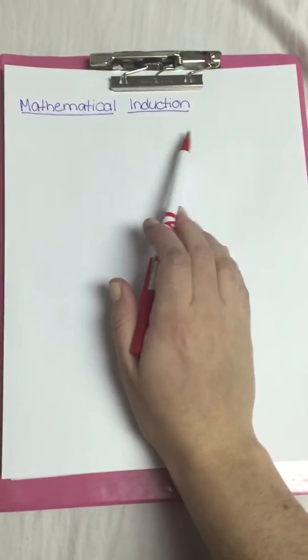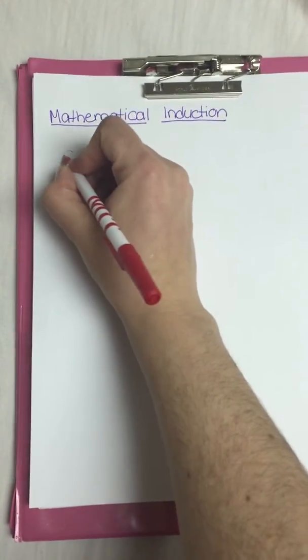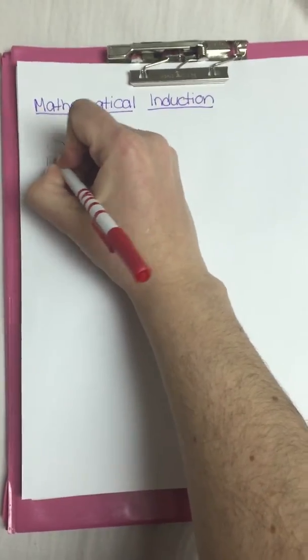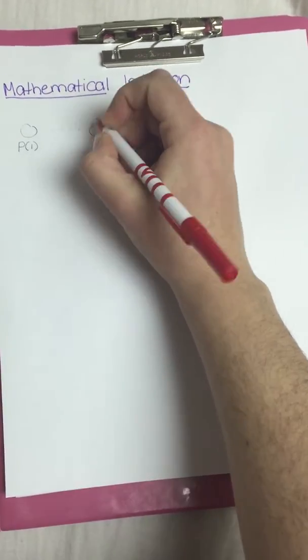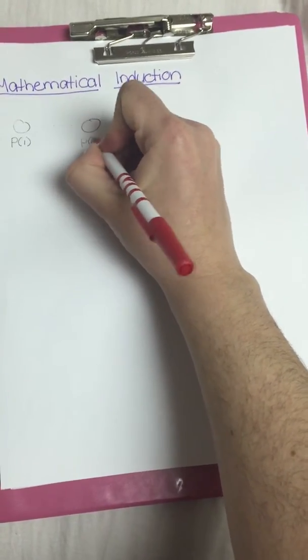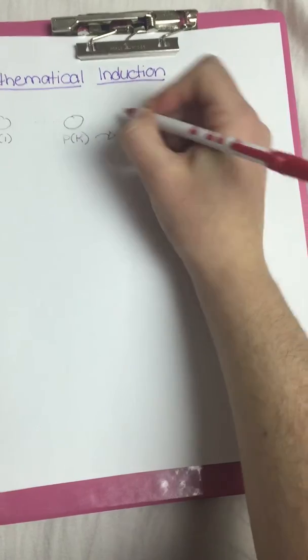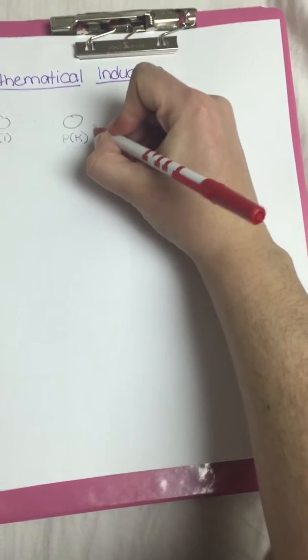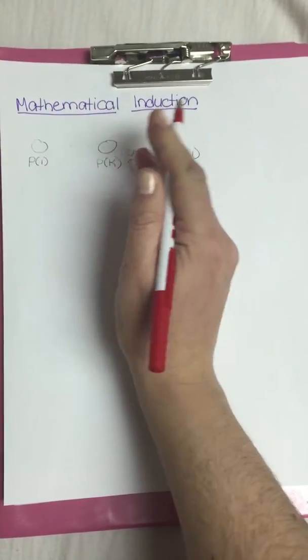In this video we're going to talk about mathematical induction. Basically what that means is if I know it's true in the base case, I'm going to call this P of 1, then I'm going to pretend it's true for some number, I'm going to call this P of k. Then I'm going to try and show that it's true for P of k plus 1. And this P just means any statement.